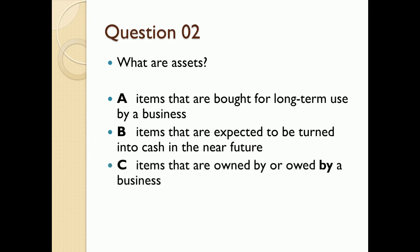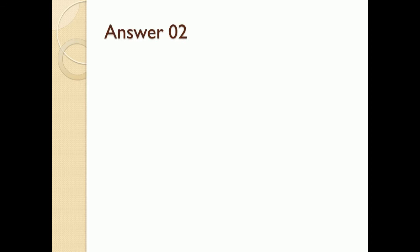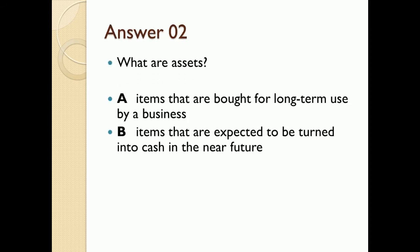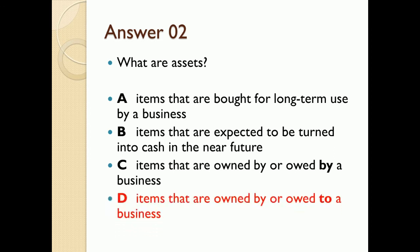Option C: items that are owned by or owed by a business. Option D: items that are owned by or owed to a business — meaning the business has something to receive. Options A, B, and C are not the answer. The correct answer is D: items that are owned by or owed to a business, because 'owed to a business' means the business has to receive something from another party.